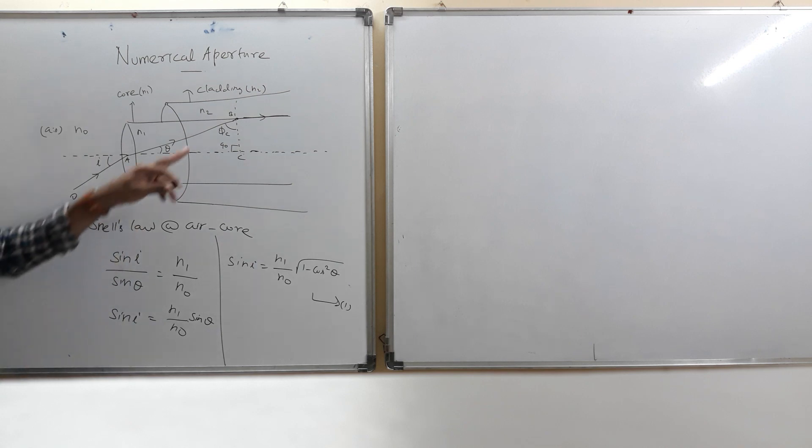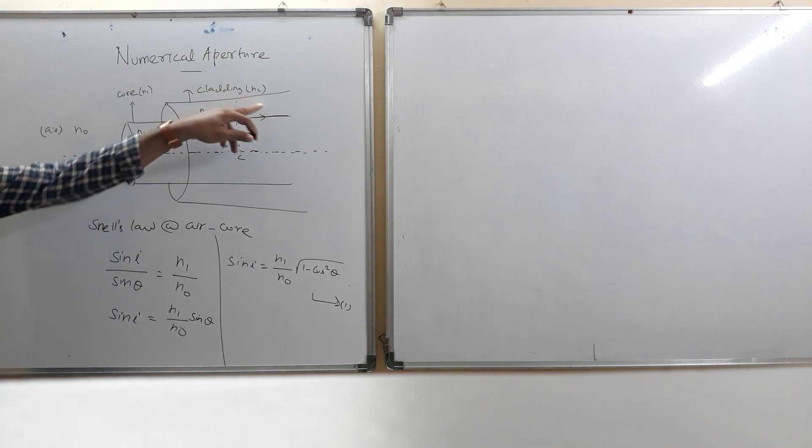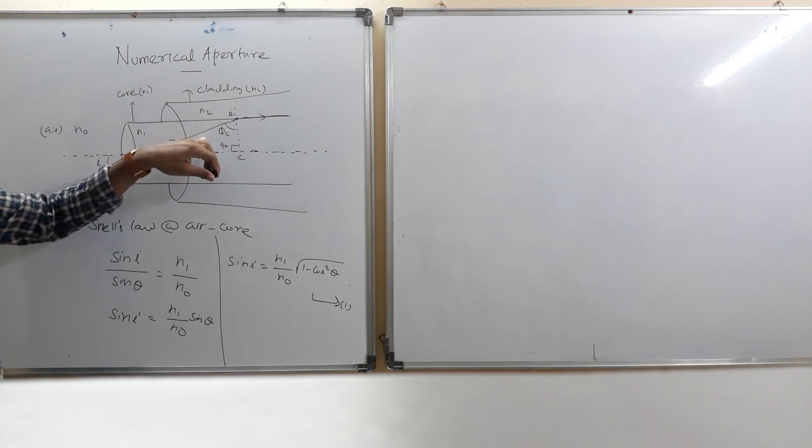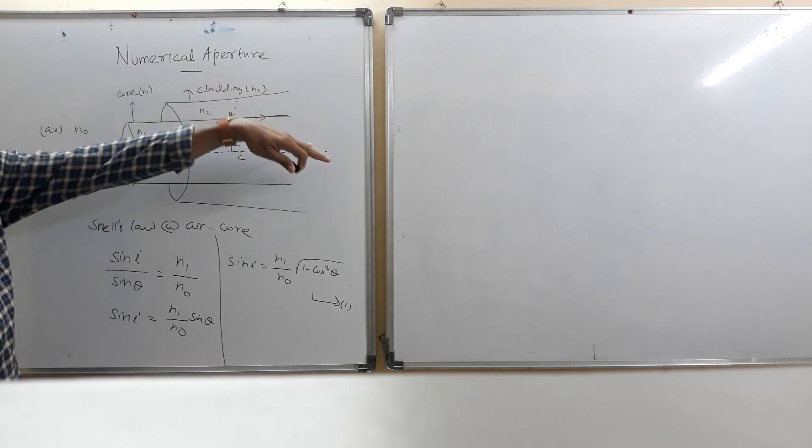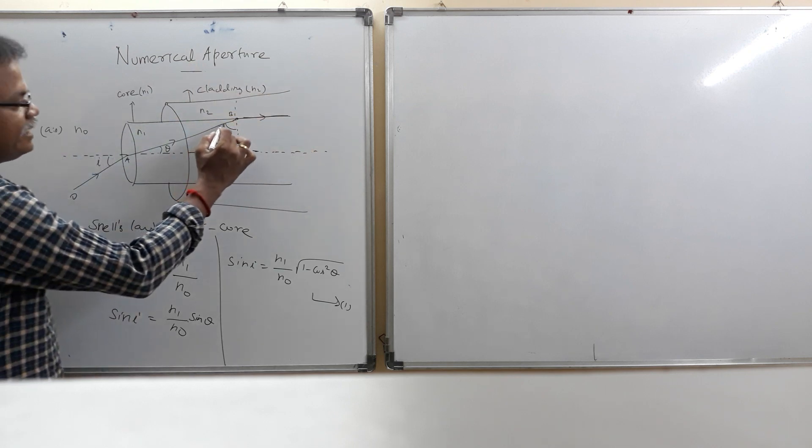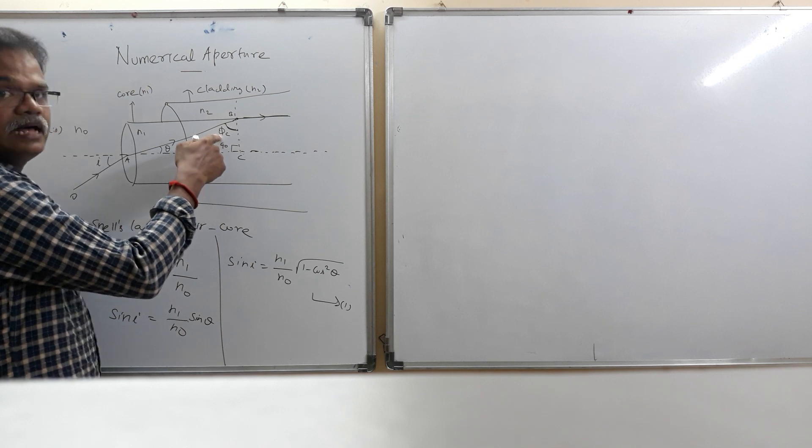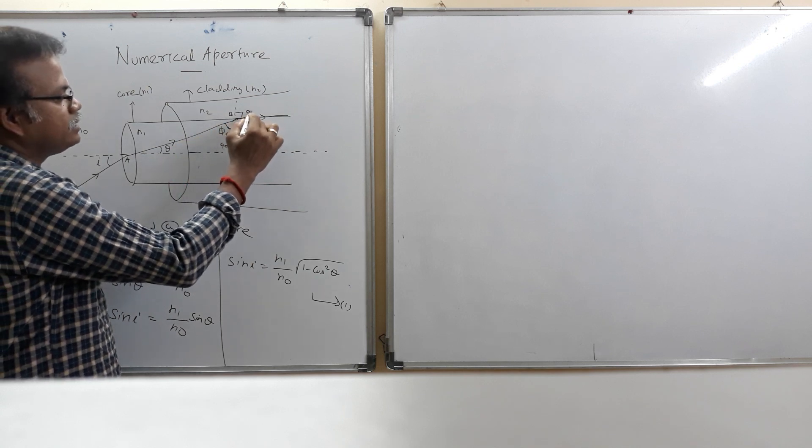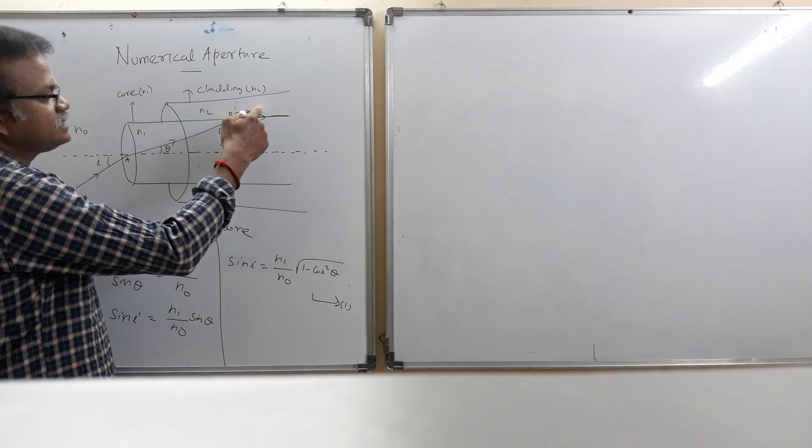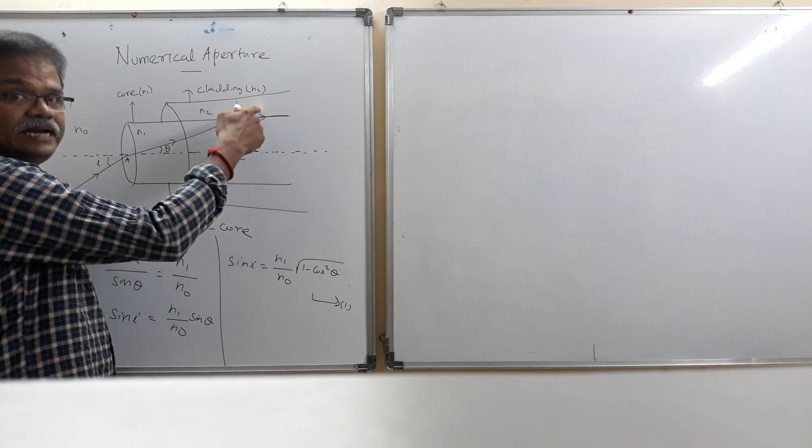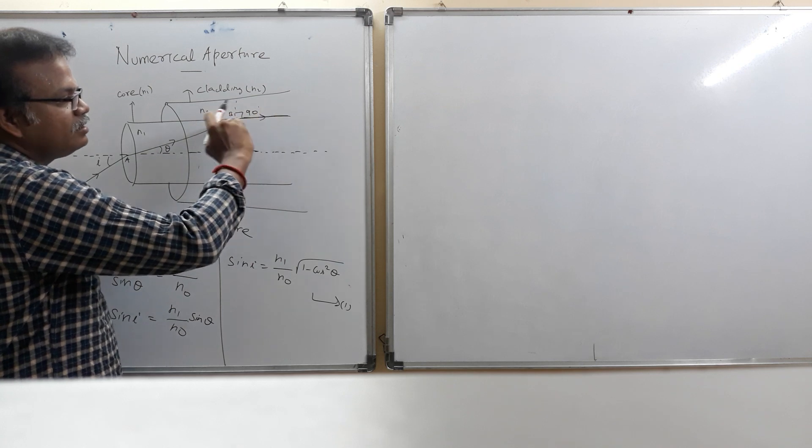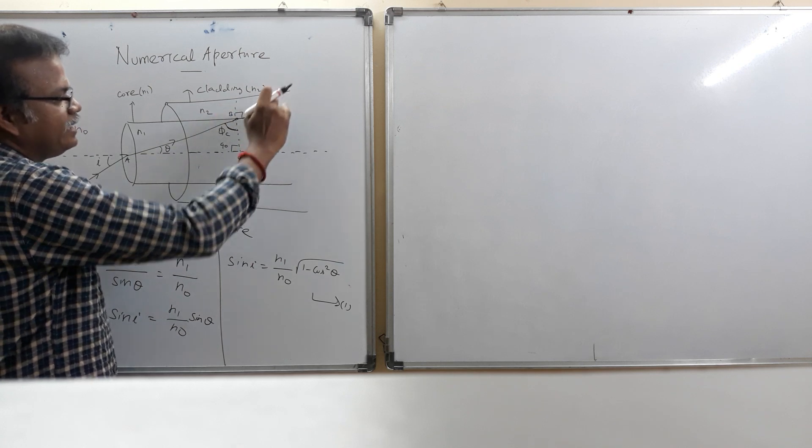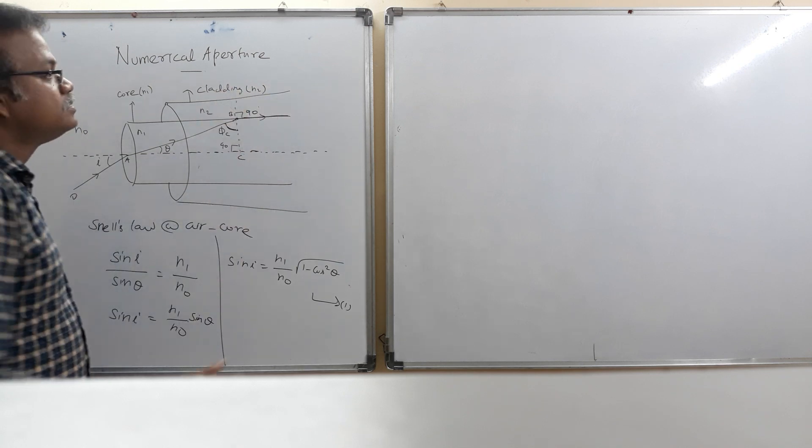Now, we come to core cladding surface. The light arriving from the core, which is denser medium, this is rarer medium, it bends away from the normal. This is angle of incidence, phi c. At critical angle, whose angle of refraction r is equal to 90 degree, because the light is just laying on the surface of the core and cladding.